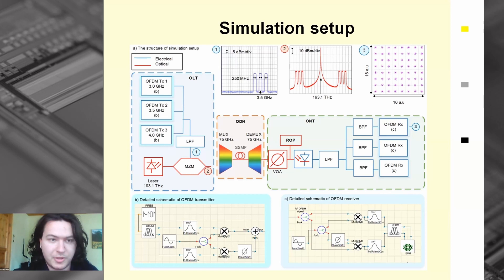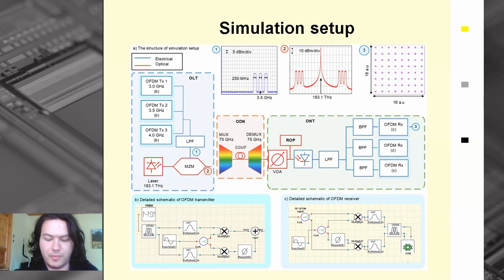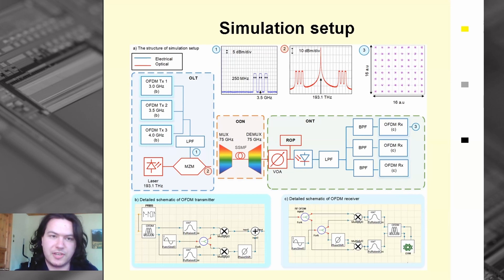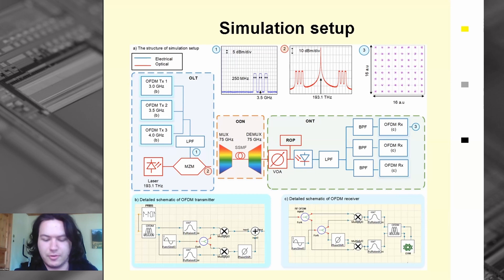The OFDM signal parameters are chosen close to 5G NR signal parameters: sub-carrier spacing of 240 kHz, number of sub-carriers set to 1024, resulting in a baud rate of approximately 250 megabaud. With 64-QAM modulation this corresponds to 1.5 Gbps per channel. The three RF channels are spaced by 500 MHz at 3, 3.5, and 4 GHz.